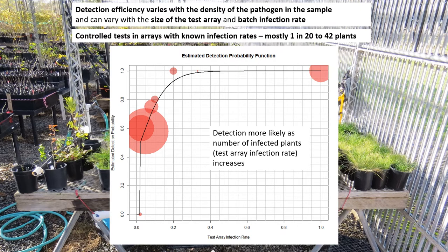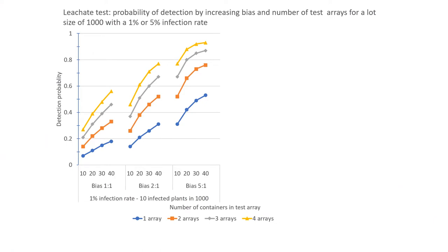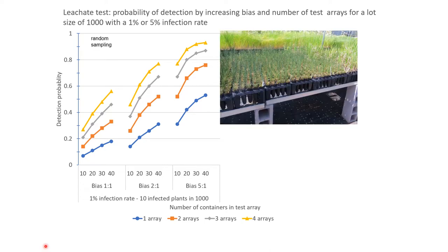To look at how this factor interacts with others, we did some Monte Carlo modeling. We were trying to detect low infection rates: with a thousand-plant batch at 1% infection rate, there are only 10 infected plants in the whole batch, meaning at least one of those has to be in a test array or it won't be detected. With random sampling, we can change the number of plants per test — increasing that gives us a better chance of including an infected plant. Or we can run multiple tests. As we have more tests, we have more chance that at least one of those tests has an infected plant in it.